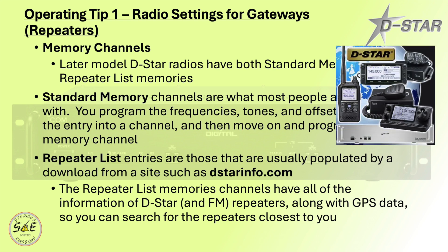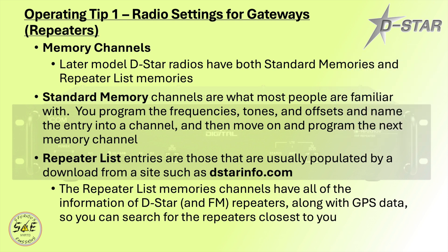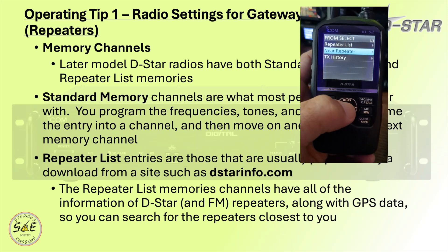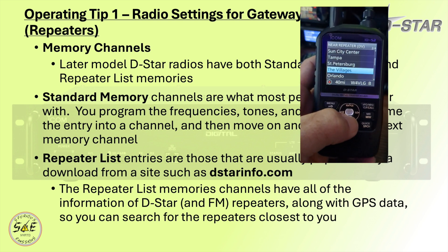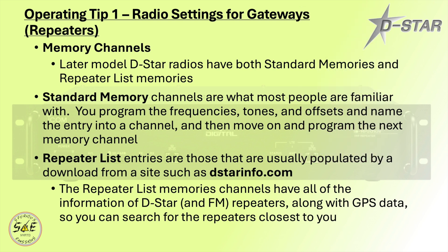Later DSTAR radios have both standard memories and repeater list memories. Standard memory channels are what most people are familiar with — you program the frequencies, tones, offsets, and name for each channel. But repeater list entries are those that are usually populated from a download site such as DSTARinfo.com or your radio manufacturer. This repeater list has channels that have all the information of DSTAR and FM repeaters along with their GPS data so you can search for repeaters closest to you — a great feature if you're traveling.